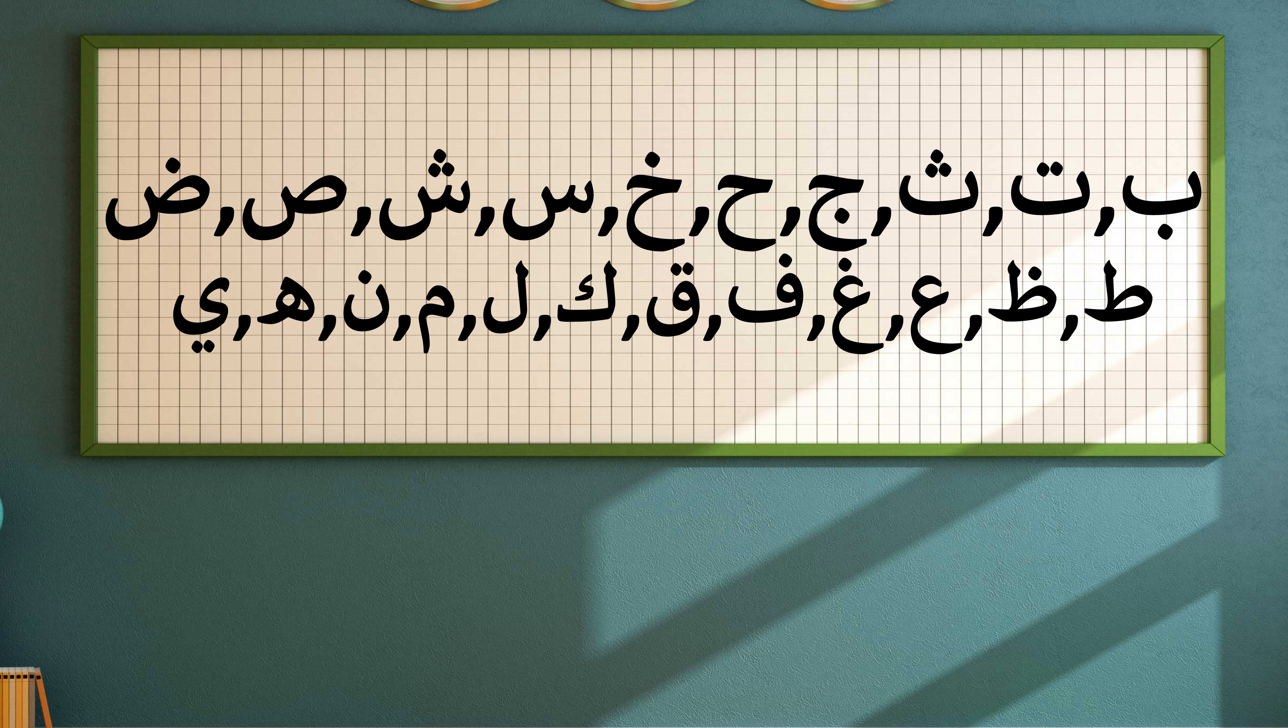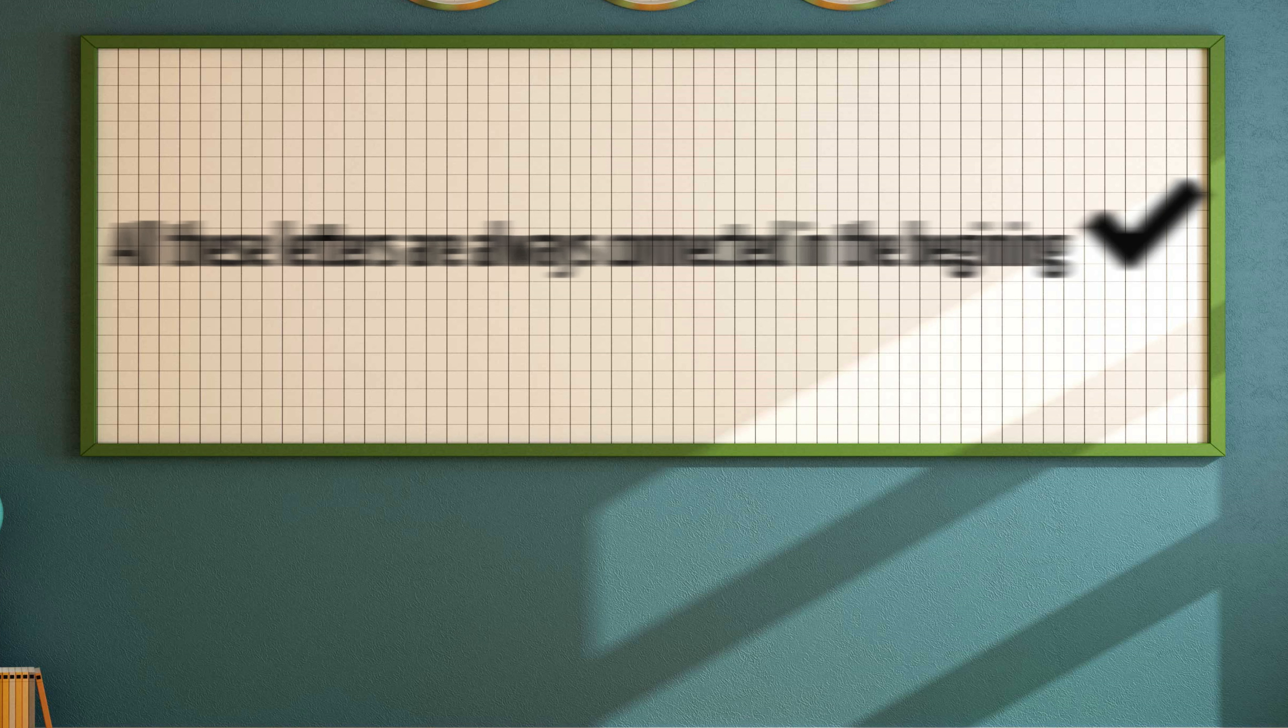Now the letters Ba, Ta, Tha, Jeem, Ha, Kha, Seen, Sheen, Saad, Daad, Tah, Dhah, Ayn, Ghayn, Fa, Qaf, Kaf, Lam, Meem, Noon, Ha, and Ya, all these letters are always connected in the beginning and can be either connected or not connected in the middle and at the end.